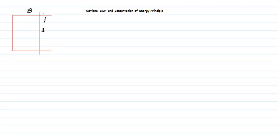In the last class we studied that if we have a magnetic field B and a rod of length L moving with velocity V in magnetic field B, then the EMF induced will be equal to BLV.